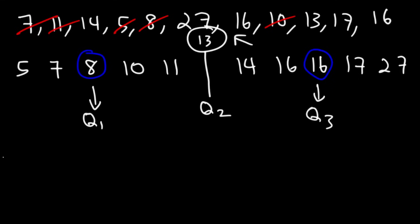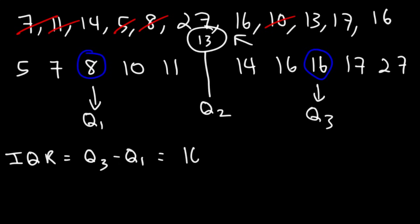Now let's calculate the interquartile range. IQR equals Q3 minus Q1, so it's 16 minus 8, which equals 8. That's how you find the interquartile range of a data set.